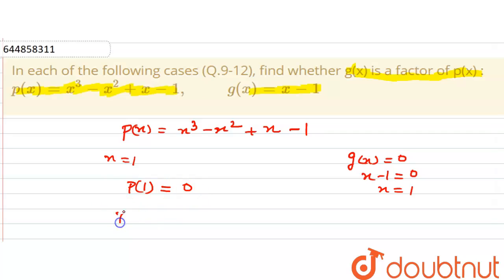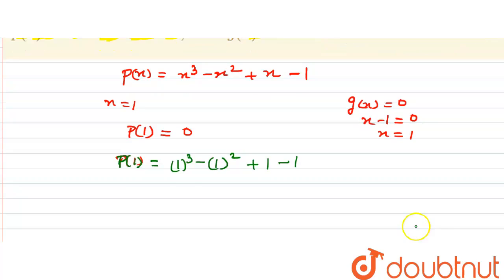So let us find out p of 1. Here p of 1 is equal to 1 cube minus 1 square plus 1 minus 1. We will get 1 minus 1 plus 1 minus 1. All the 1's will get cancelled out and we will get 0. We can see that since our remainder p1 is equal to 0,